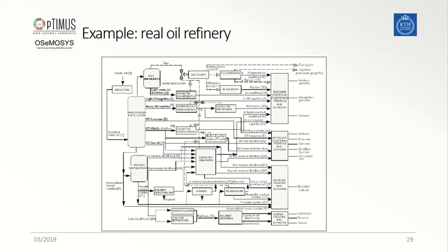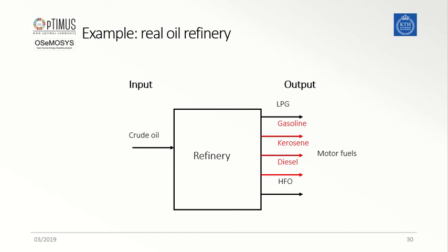One example can be drawn from the picture above, where an oil refinery is represented in detail, and which can be simplified to a rectangular box with some inputs, outputs, and associated costs. For an oil refinery, these are the only pieces of information needed to correctly represent it in an energy system model built in OSeMOSYS. Similarly, other types of technologies can be simplified in order to be represented in OSeMOSYS.